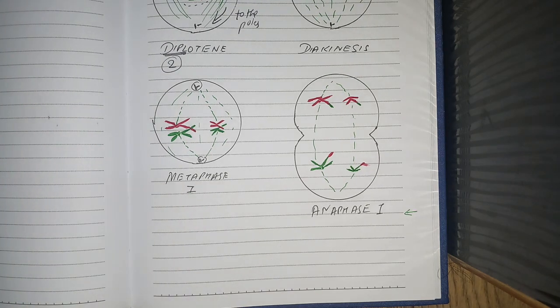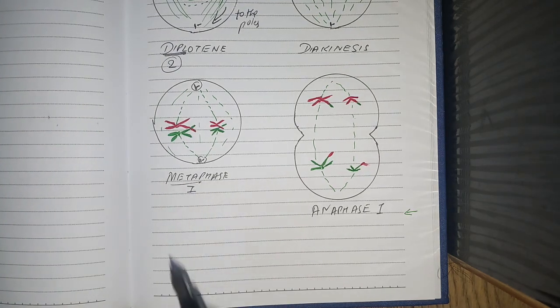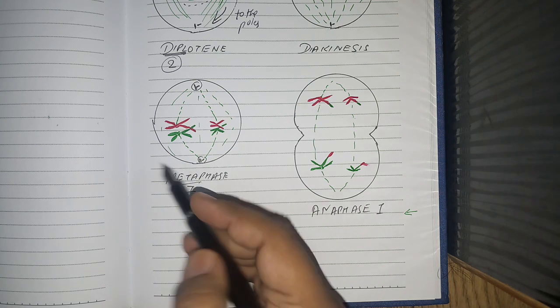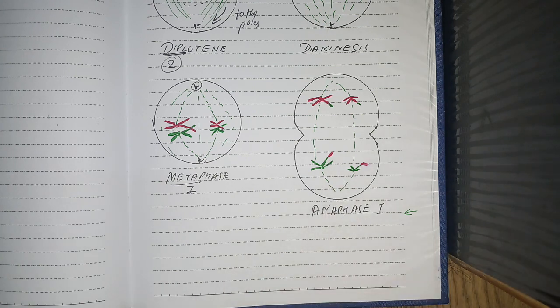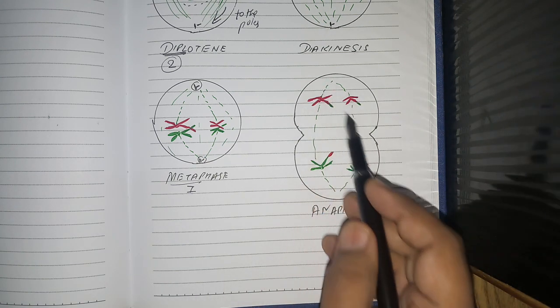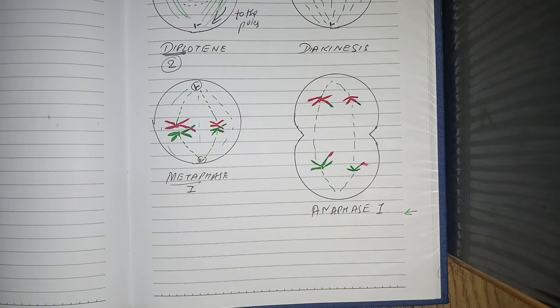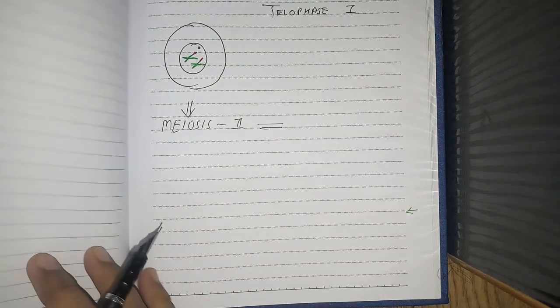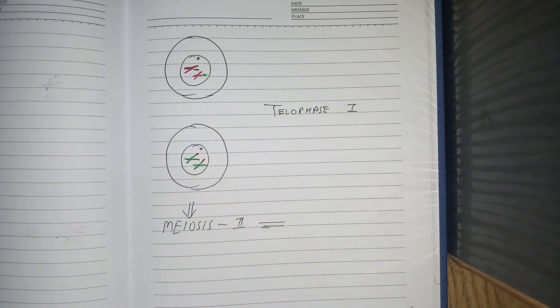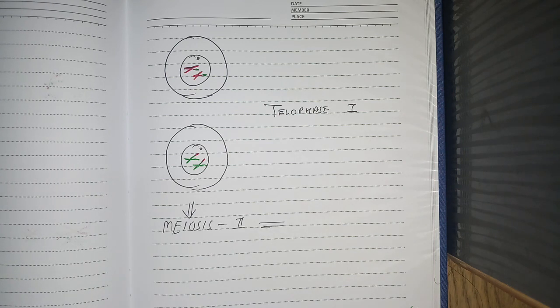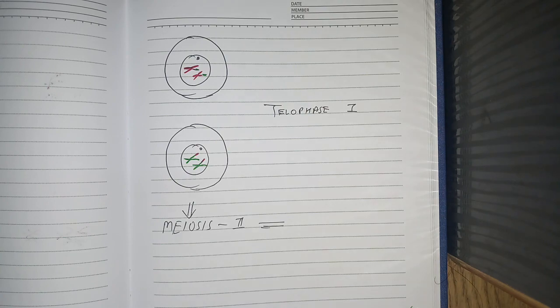In the next stage, which is metaphase I—we've seen metaphase before in mitosis—all the chromosomes are arranged in an equatorial plane. They are pulled by the spindle fibers. Then the anaphase happens, with this banana-like structure getting pulled towards the pole. Then telophase happens, where we get two cells—two haploid cells.